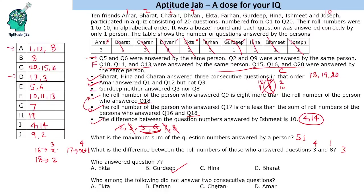For the question about who did not answer two consecutive questions: Ekta answered 5 and 6 (consecutive), Farhan answered 10 and 11 (consecutive), Charan answered 15 and 16 (consecutive). Amar answered questions 1, 8, and 12 — none of which are consecutive. So the answer is Amar: he did not answer any two consecutive questions.